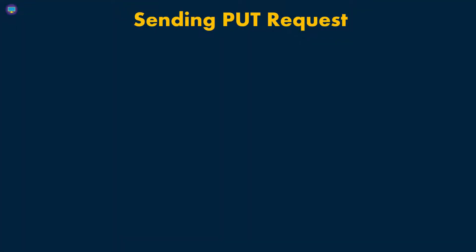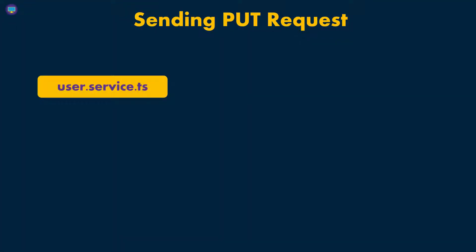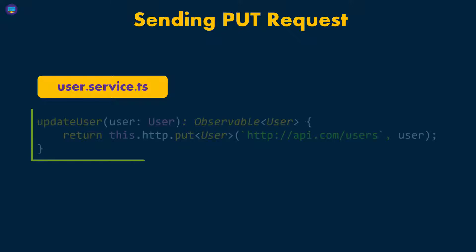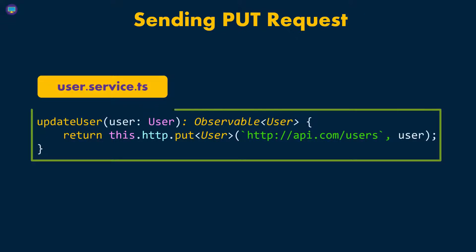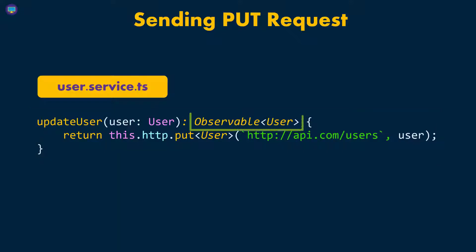Let's go ahead and look at the PUT request. The PUT request is going to be very similar to the POST request. We're going to create a function and give it an appropriate name — in this case, it's updateUser, because that's the action we're trying to take. Then we're going to make it return an observable, just like before.